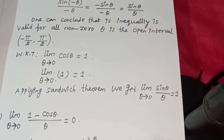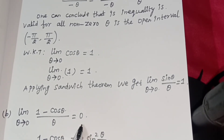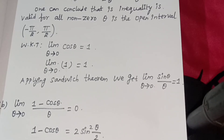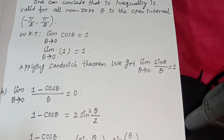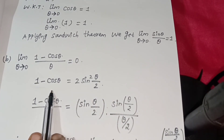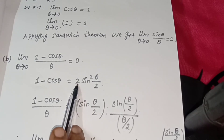Next, subdivision B: limit theta tends to 0 of (1 − cos theta) divided by theta equals 0. We use the identity 1 − cos theta equals 1 − cos(theta/2 · 2), rewriting (1 − cos theta) over theta. Substituting, we split the expression using theta divided by 2.